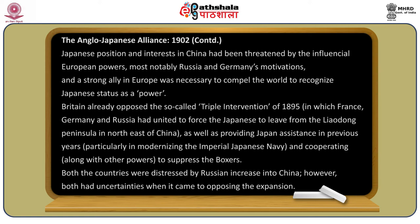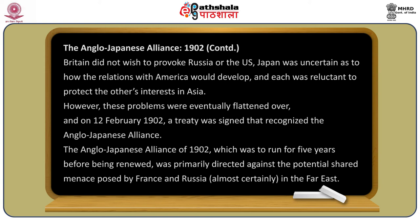Both countries were distressed by Russian expansion into China, but both had uncertainties when it came to opposing that expansion. Britain did not wish to provoke Russia or the US; Japan was uncertain as to how its relations with the US would develop, and each was reluctant to protect the other's interests in Asia. However, these problems were eventually resolved, and on 12th February 1902 a treaty was signed establishing the Anglo-Japanese alliance.